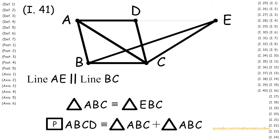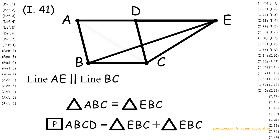Now since triangle ABC is congruent to triangle EBC, then parallelogram ABCD is congruent to triangle EBC plus triangle EBC. Therefore, we have proven that if a parallelogram and a triangle have a base in common and are in the same parallel lines, then the parallelogram is congruent to double of the triangle.